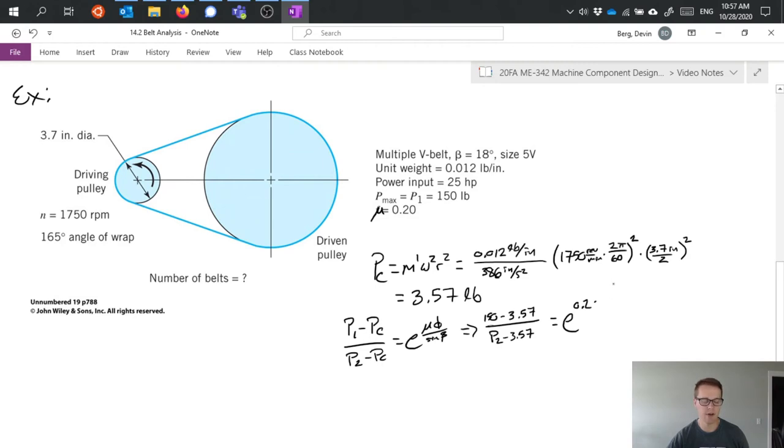Angle was 165 degrees. That is 2.88 radians divided by sine of 18 degrees.